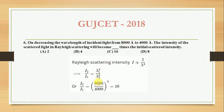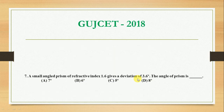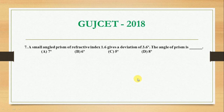Lambda 1 is 8000 and lambda 2 is 4000. Solving this, i2 is equal to 16 times i1. So the scattered intensity becomes 16 times the initial intensity.